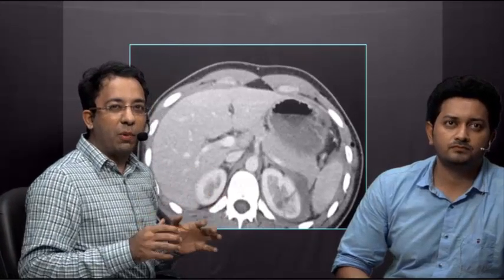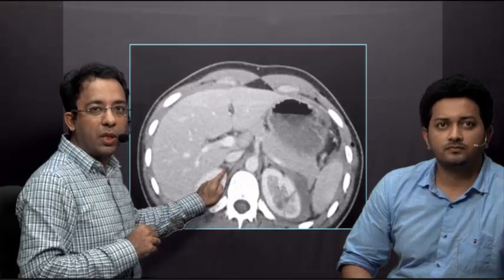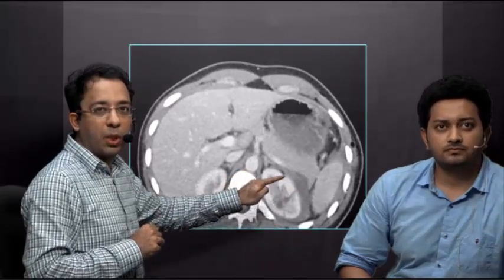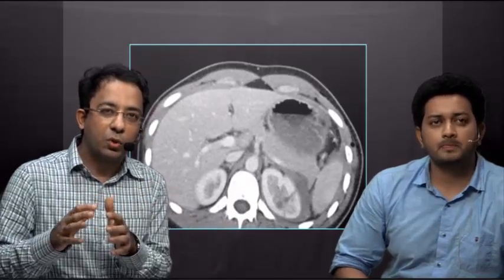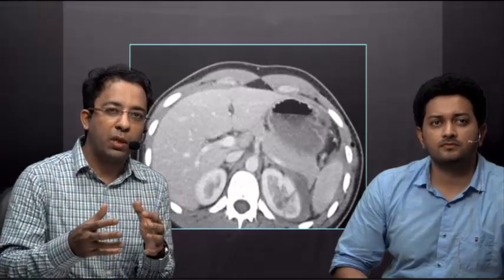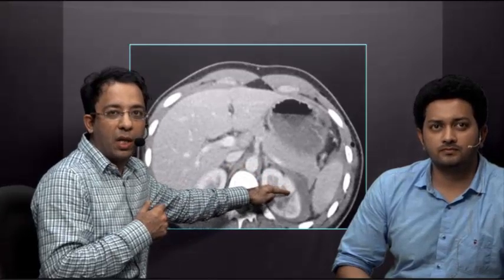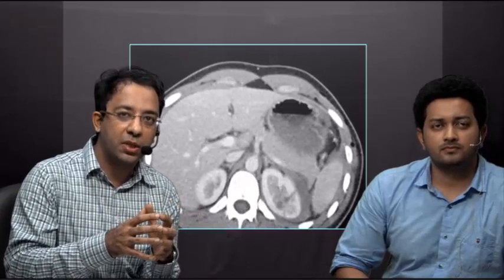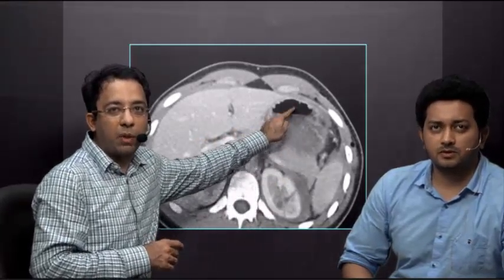In the next patient we have more anatomy visible: liver, portal vein right branch, right kidney, adrenal, IVC, aorta, left kidney, spleen, pancreas, and stomach. There is a perinephric hematoma around the left kidney. To differentiate a hematoma from a urinoma, we look at Hounsfield units: 30 and above indicates hematoma; 0 to 20 indicates urinoma. Here the cortical laceration is more than 1 centimeter in size but does not extend to the pelvicalyceal system — so we call this Grade 3.